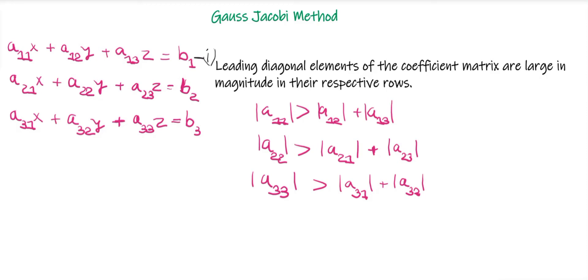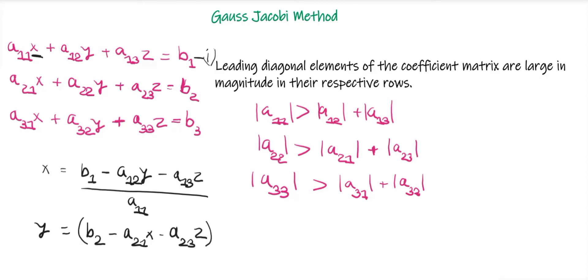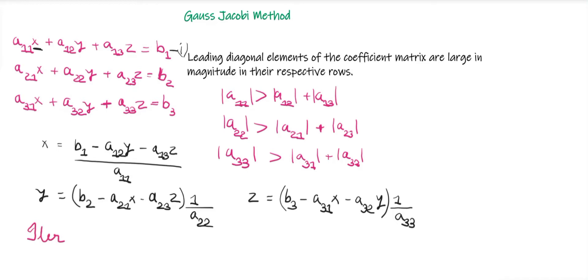Once these conditions are satisfied, we rewrite the equations in the form of x, y, and z. The first equation gives x = (b1 − a12·y − a13·z) / a11. Then y = (b2 − a21·x − a23·z) / a22. And the third equation gives z = (b3 − a31·x − a32·y) / a33.